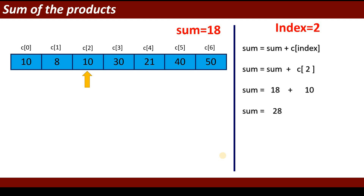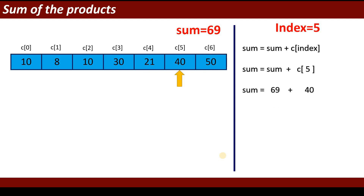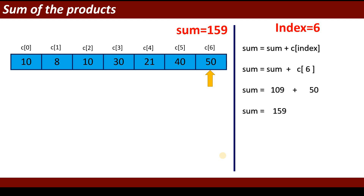At index 2: c[2] is 10, and 18 + 10 = 28. At index 3: c[3] is 30, and 28 + 30 = 58. At index 4: c[4] is 21, and 58 + 21 = 79. Wait — at index 5: value is 40, and 69 + 40 = 109. At index 6: the element is 50, and 109 + 50 = 159. So the final sum equals 159.